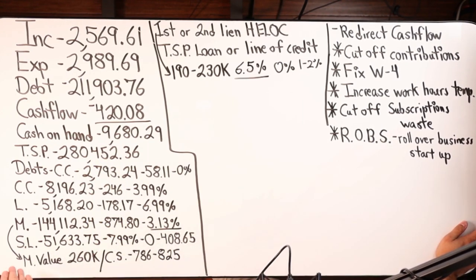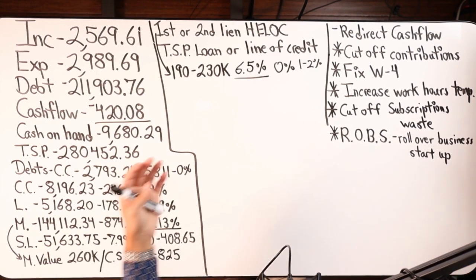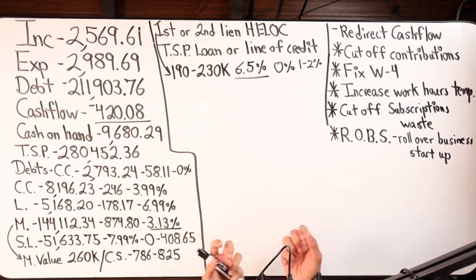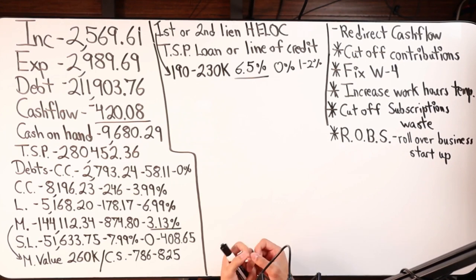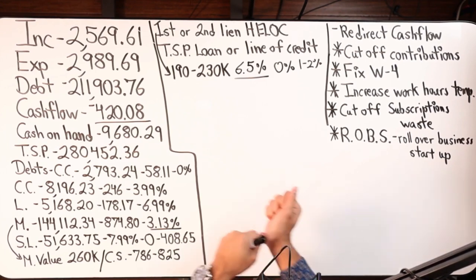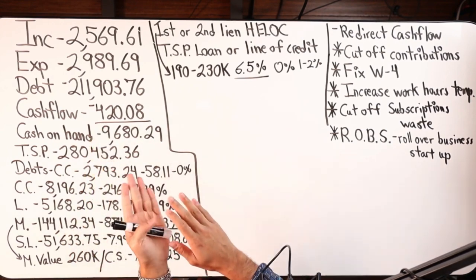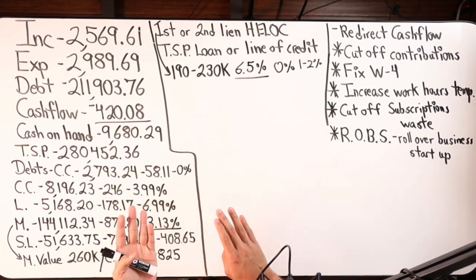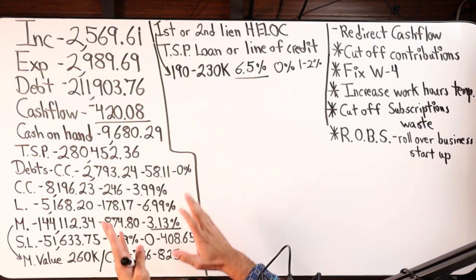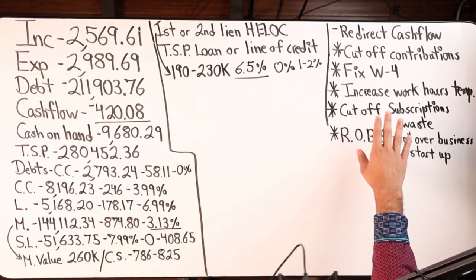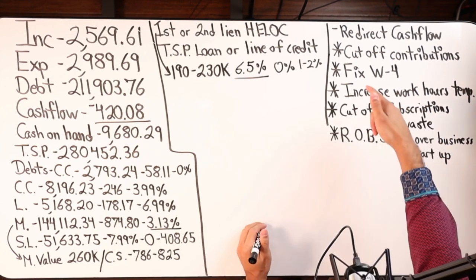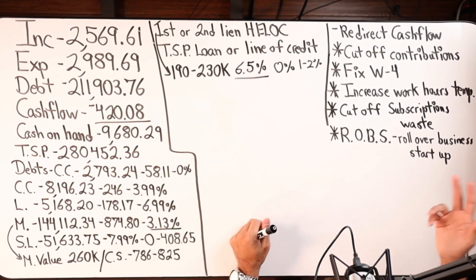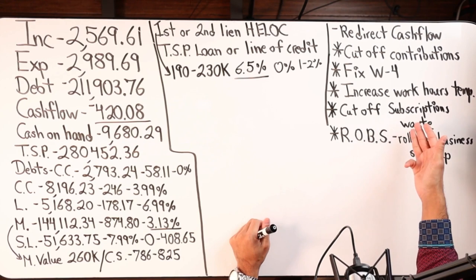Based on the numbers, this person could get a HELOC — first lien preferred. That gives us access to equity up front to wipe out some debts, get cash flow from negative back to even and potentially positive. Additional strategies to redirect cash flow include: not overpaying the IRS by fixing the W-4, potentially increasing work hours, and cutting off subscriptions. Americans spend about eight to nine hundred dollars a month on subscriptions — Netflix, Hulu, Disney Plus, groceries, Uber Eats — it adds up.